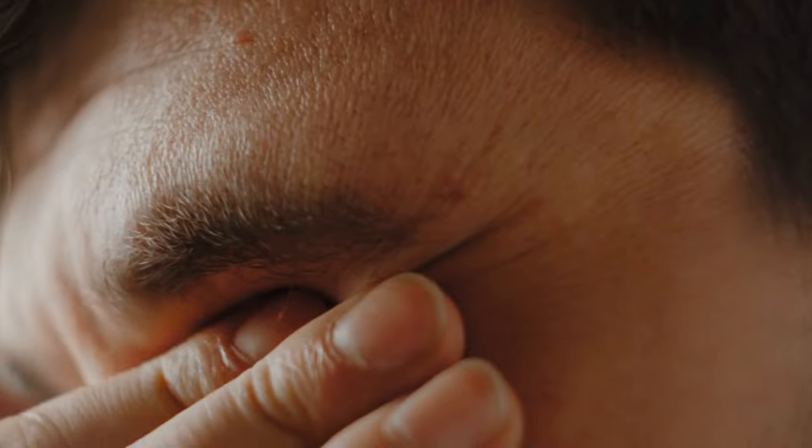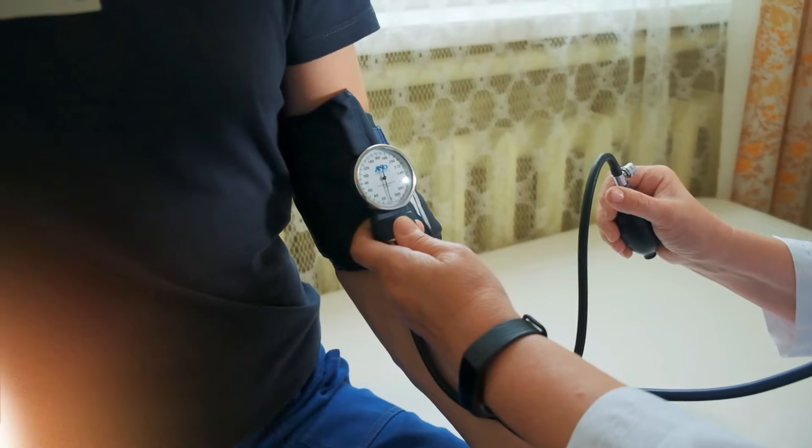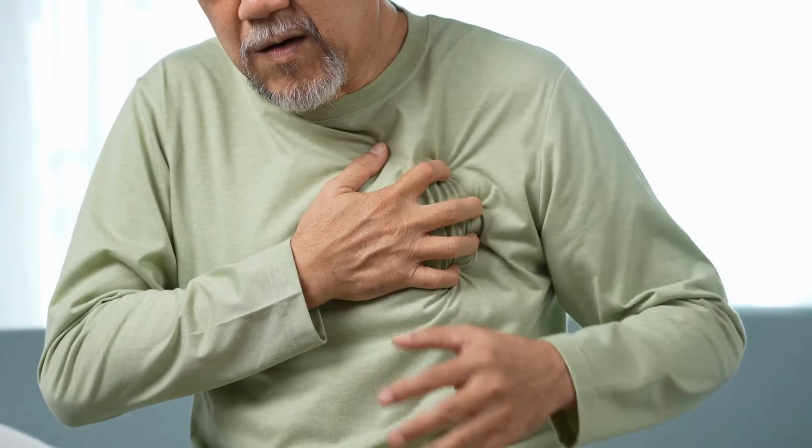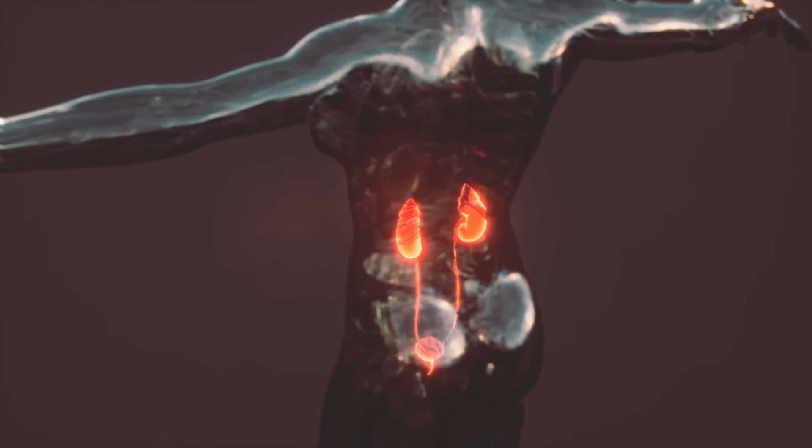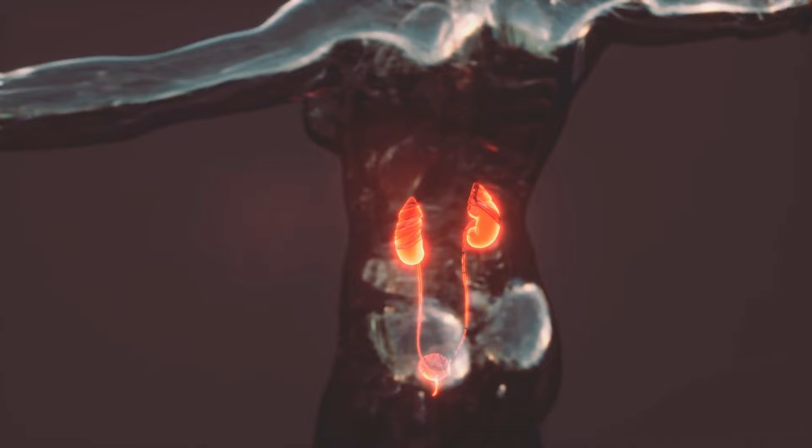Let's dive in and discover how to keep your kidneys functioning optimally for years to come. As we age, our kidney function naturally declines. It's a gradual process, but it can lead to problems like fatigue, high blood pressure, and even increased risk of heart disease. The good news? We can significantly slow down this decline and keep our kidneys happy with some simple lifestyle changes, particularly focusing on our diet.